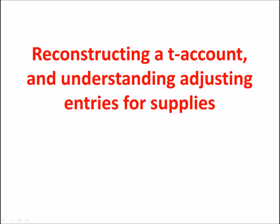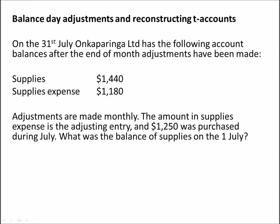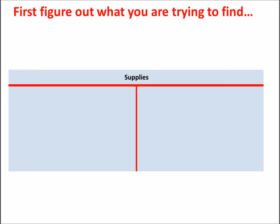I'll demonstrate reconstructing a t-account by using this question. A question like this requires you to understand the adjusting entries relating to the asset supplies and how t-accounts work, so that you can reconstruct the supplies account to calculate the opening balance. We're given the closing balance of the supplies account and some additional information about what would have been posted to this account during the month, and we need to calculate what the balance was at the beginning of the month. The best way to do this is to draw up a t-account.